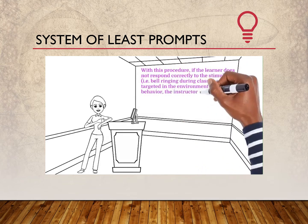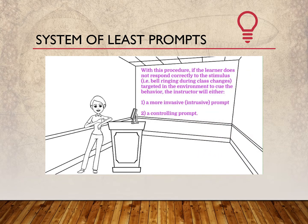With this teaching procedure, if the learner does not correctly respond to the target stimulus — the stimulus that was targeted by the instructor to cue the student that it's time to respond — then they will follow up by doing one of two things: they will implement a more intrusive prompt or a more controlling prompt. The prompt level they select depends on where they are within the prompting hierarchy. The target stimulus is the stimulus that the instructor identified as the cue that will cause the student to engage in the behavior they are learning.